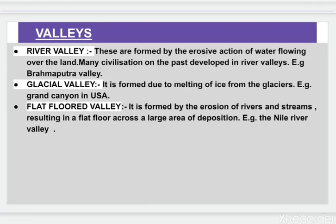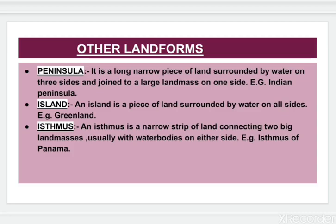Next is glacial valley. It is formed due to melting of ice from the glaciers, for example, the Grand Canyon in the USA. A flat-floored valley is formed by the erosion of rivers and streams, resulting in a flat floor across a large area of deposition. Example: Nile River Valley. The last landform is peninsula. A peninsula is a long, narrow piece of land surrounded by water on three sides and joined to a large land mass on one side. Example: Indian Peninsula.